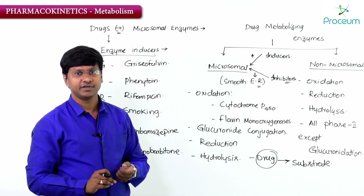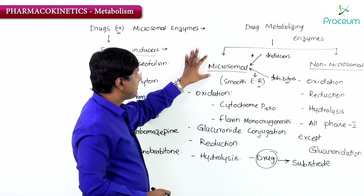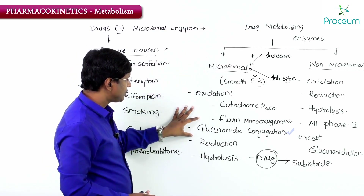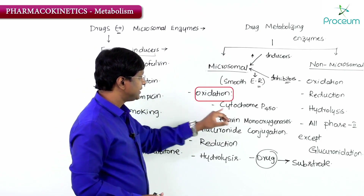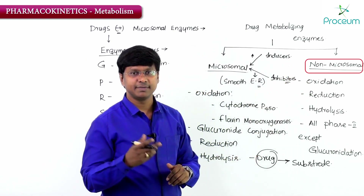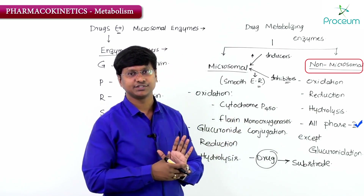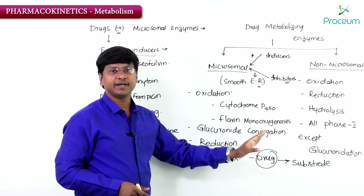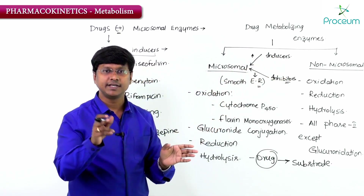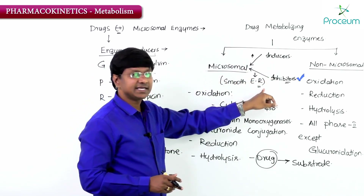To summarize: drug metabolizing enzymes are divided into microsomal and non-microsomal. Microsomal enzymes are in the smooth endoplasmic reticulum and metabolize drugs via oxidation (by cytochrome P450 and flavin mono-oxygenases), glucuronide conjugation, reduction, and hydrolysis. Non-microsomal enzymes handle oxidation, reduction, hydrolysis, and all Phase 2 reactions except glucuronidation. The drug metabolized is the substrate; chemicals increasing enzymes are inducers and those decreasing are inhibitors.